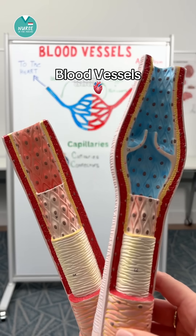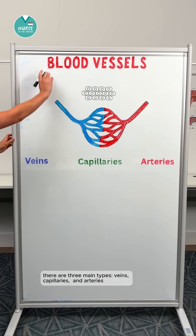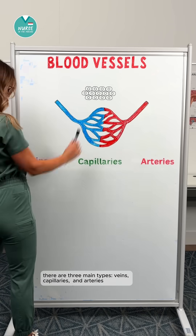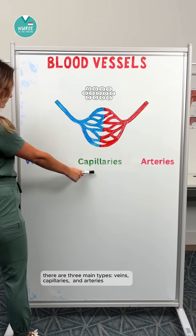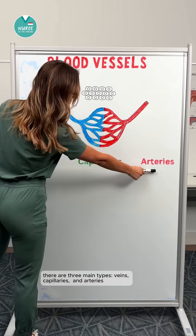Let's talk about blood vessels. There are three main types: veins, capillaries, and arteries.